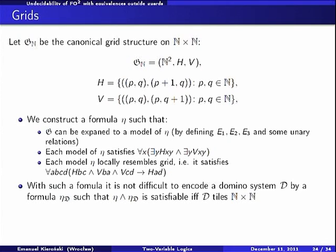We need a formula, a formula eta, such that the standard grid, that should be g_n here, can be expanded to a model of eta. Expanded because the standard grid has two predicates, h which is horizontal relation for horizontal neighborhood, and v for vertical. So we expand this language by some unary predicates, unary predicates and three equivalence relations. And we want every, we want this standard grid, we have to be able to expand the standard grid to a model of eta. This is one property which we want.